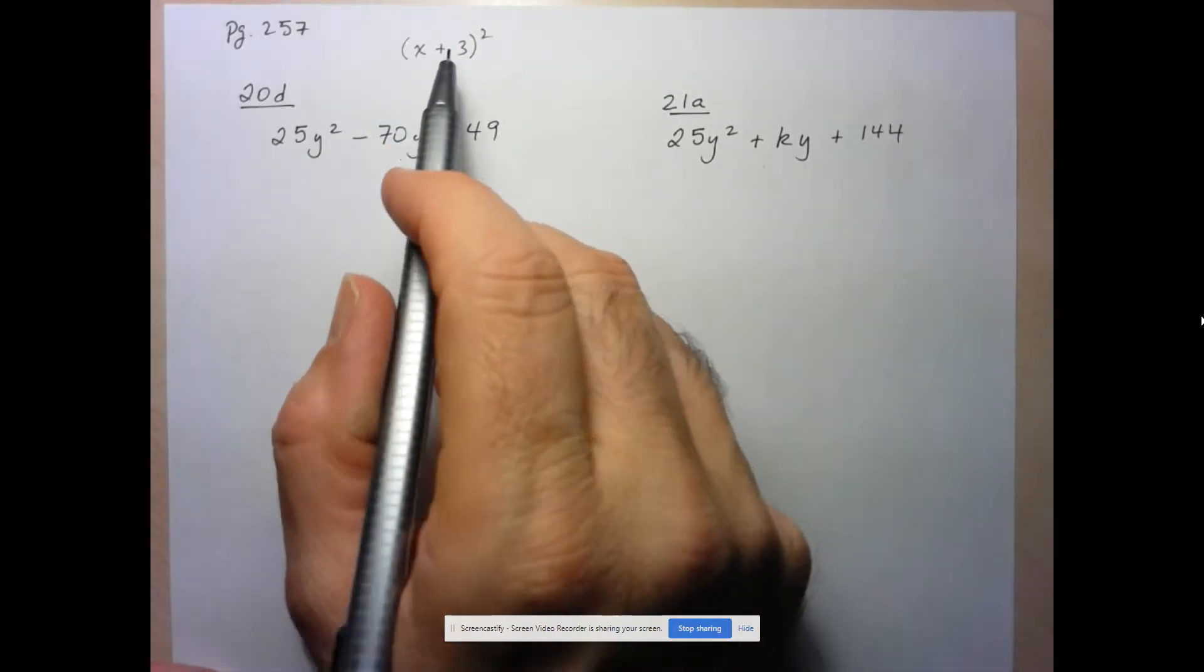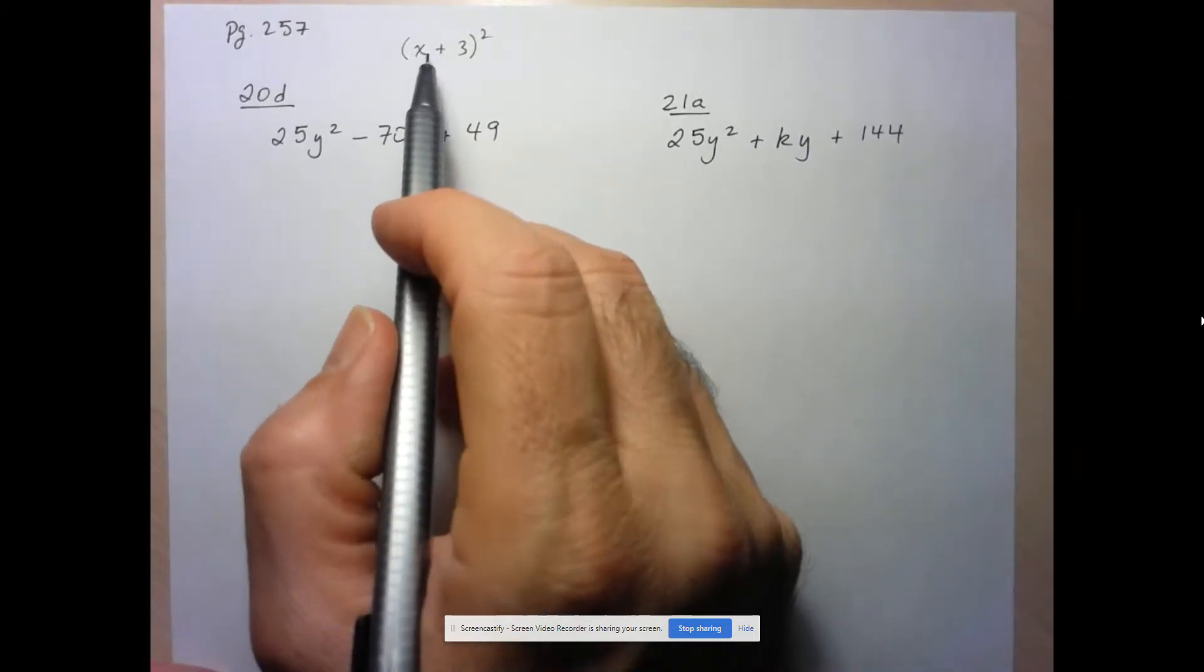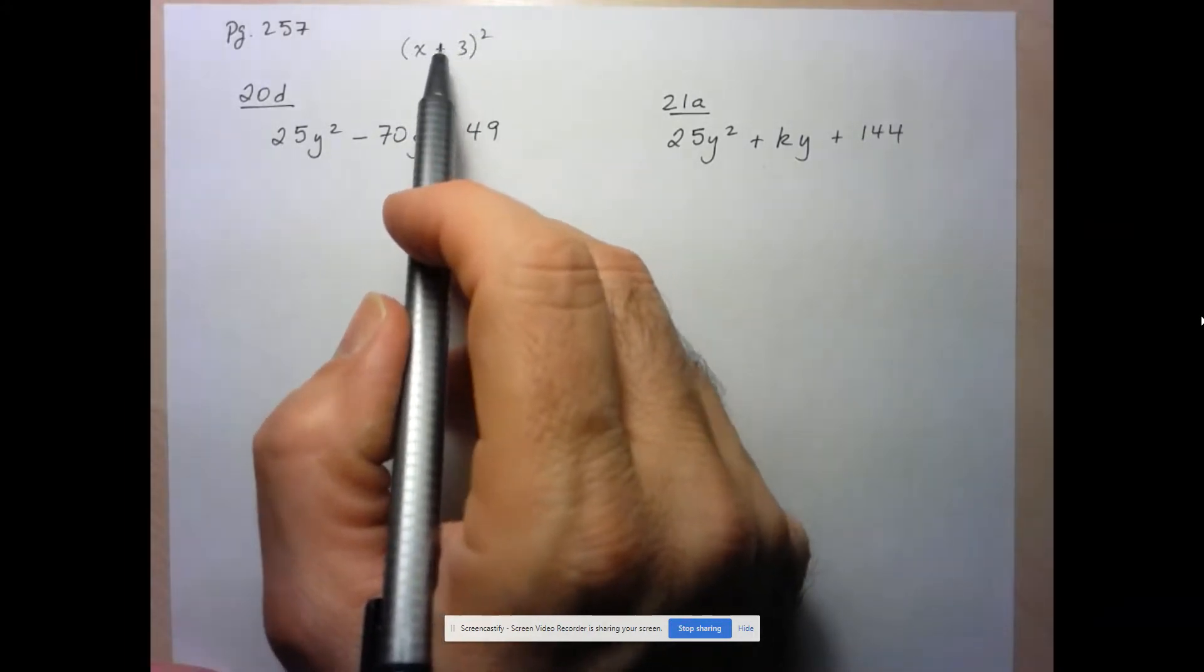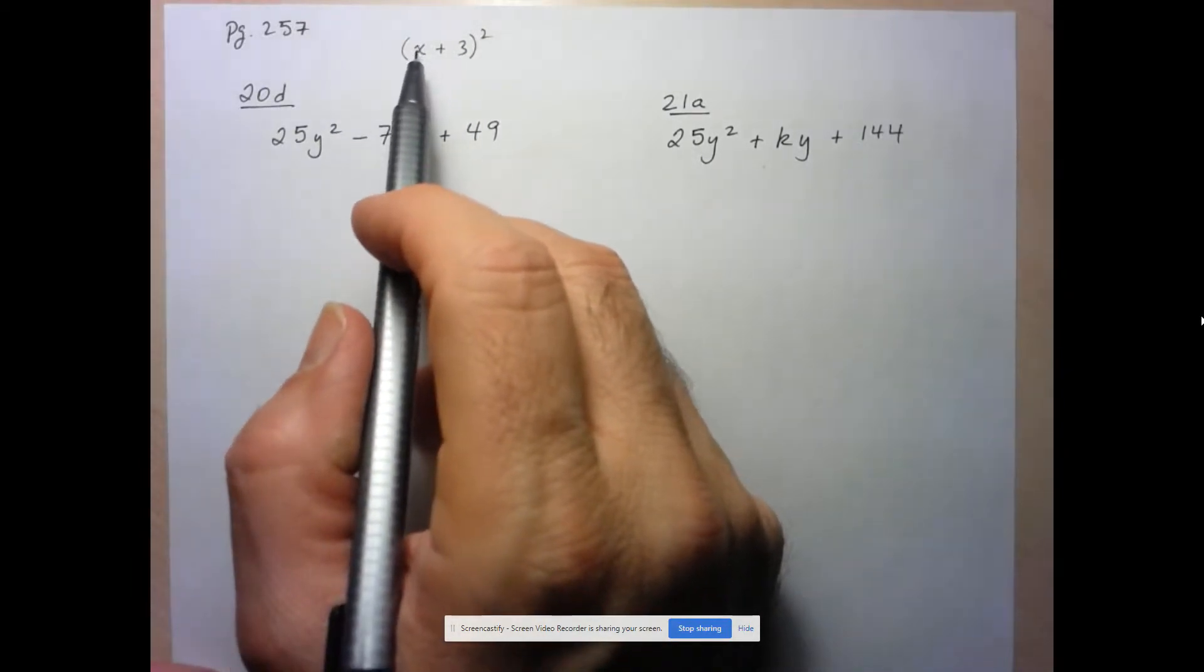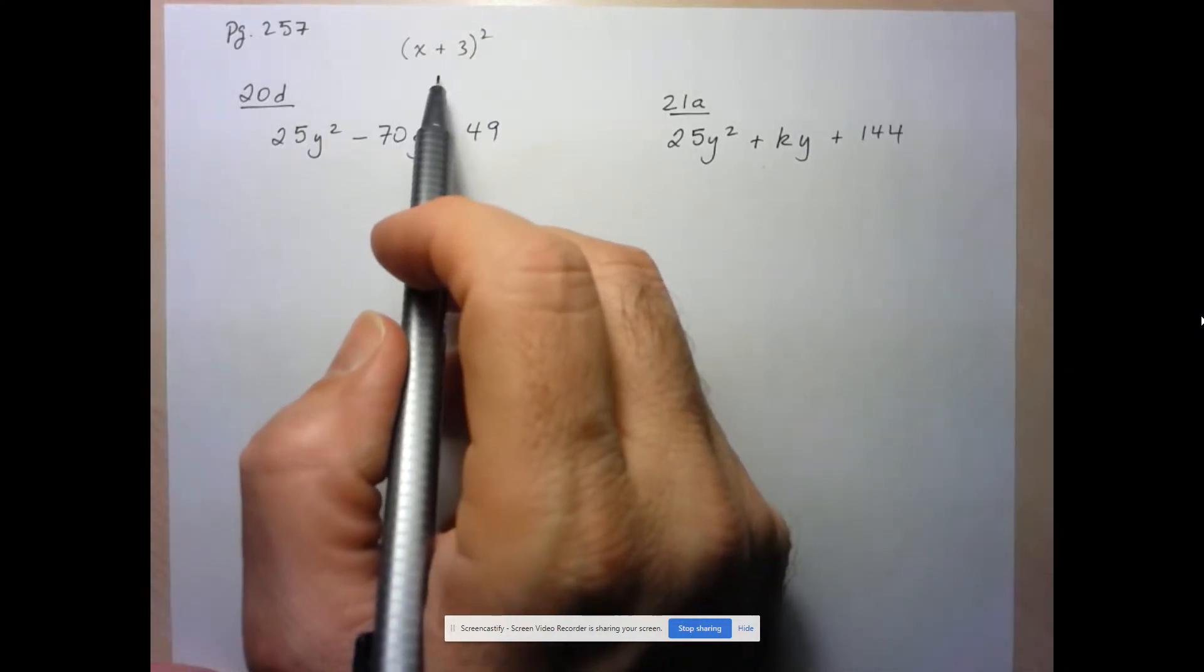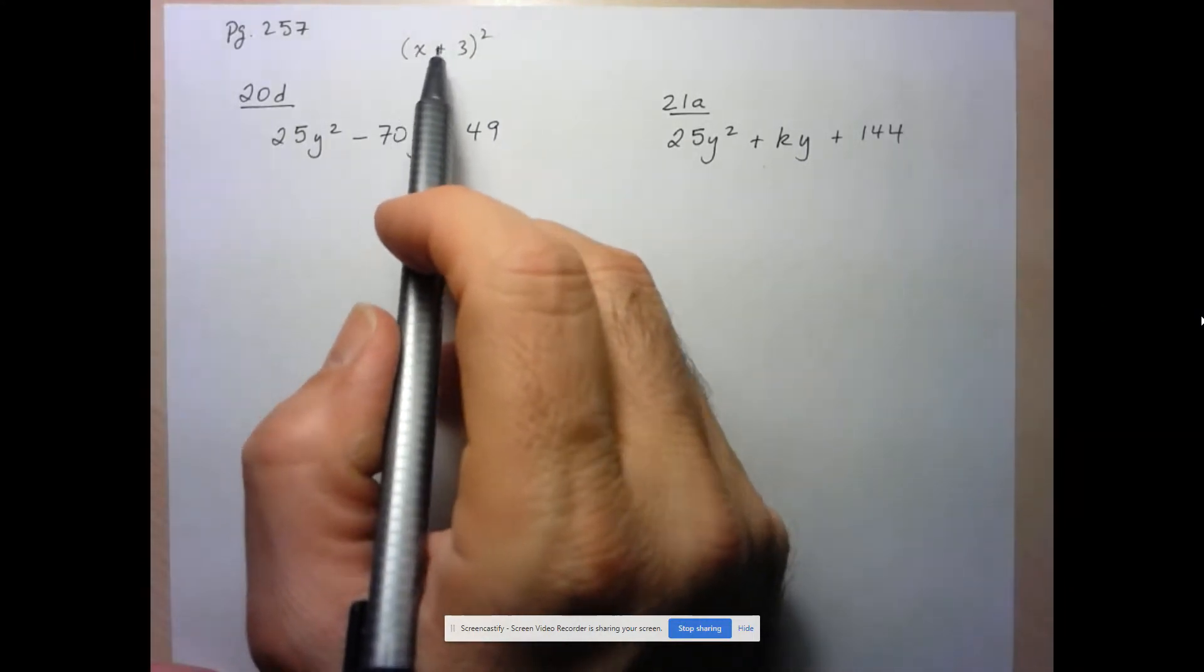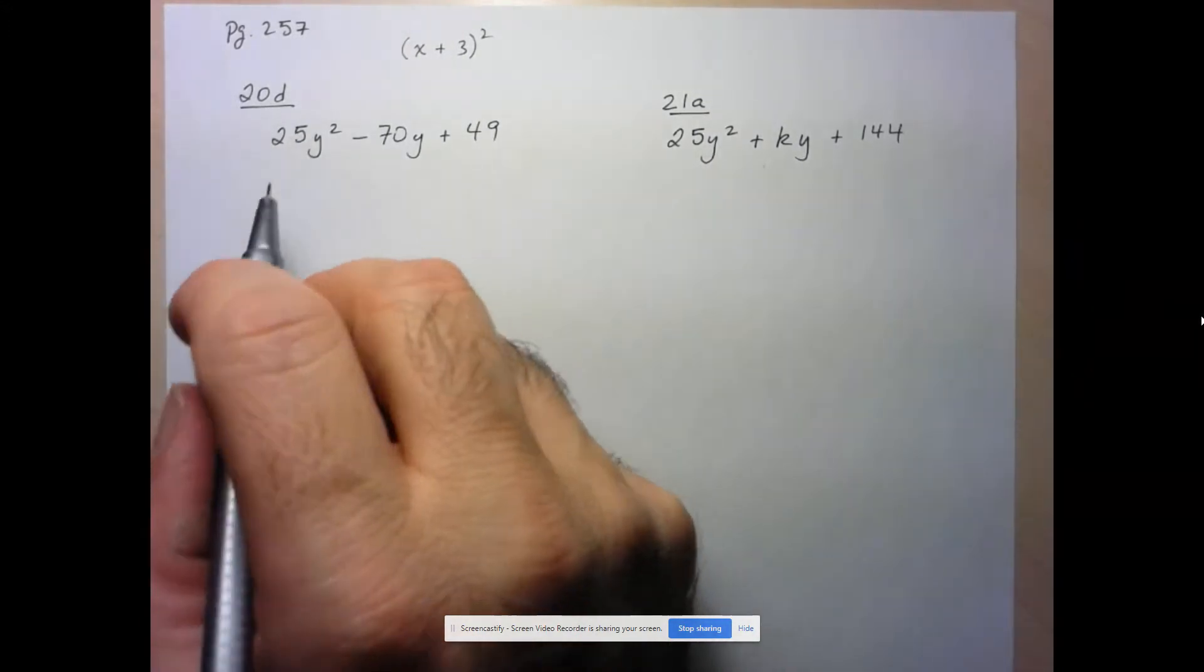The way in which we could expand this is we realize that the result is going to be the square of the first, the square of the last, and twice the product of first and last, if you remember that song. So it would be x squared plus you'd end up with a 3 squared 9, and the middle term would be 2 times 3x, the product of first and last. So we're going to try to go backwards.